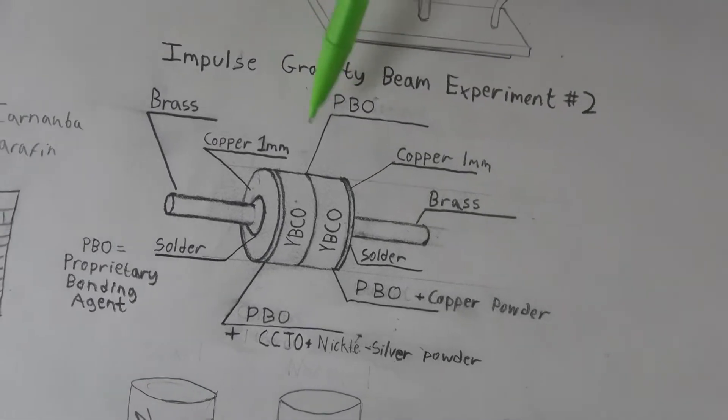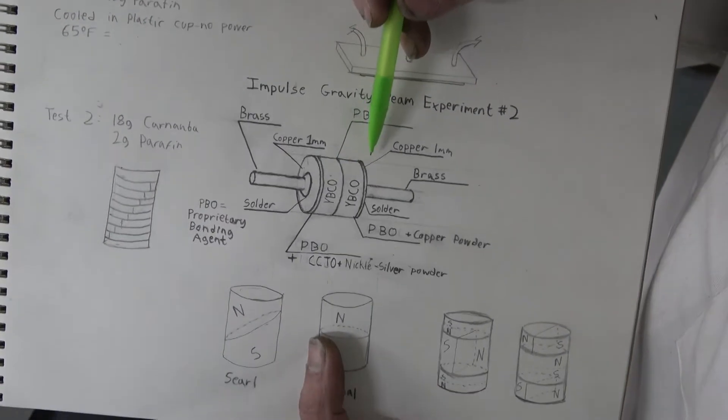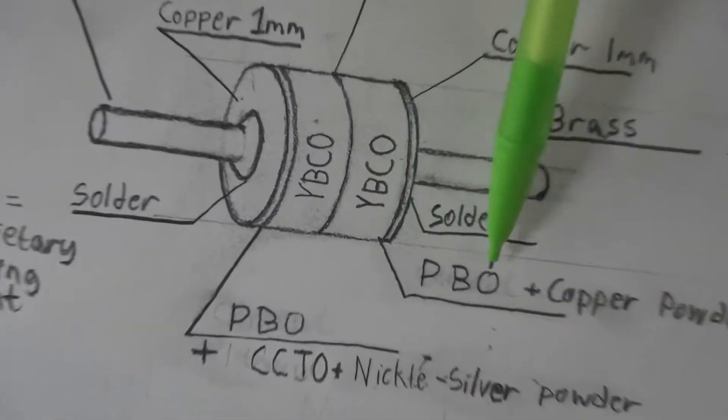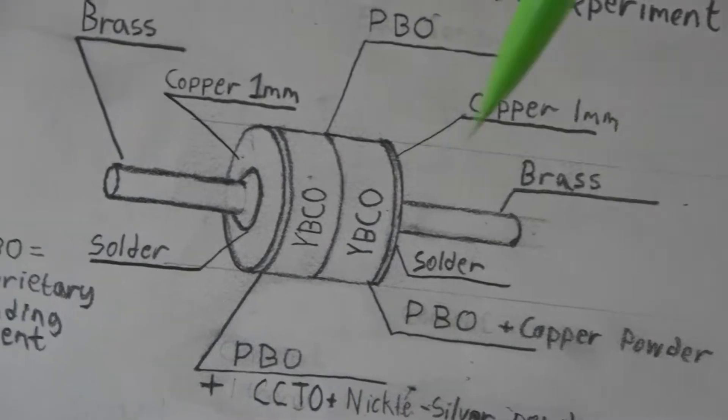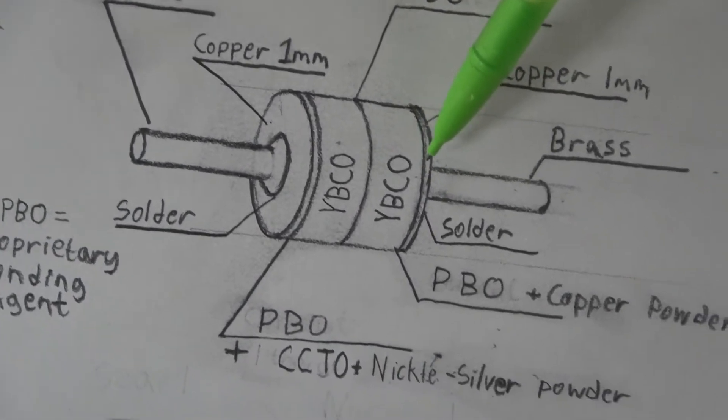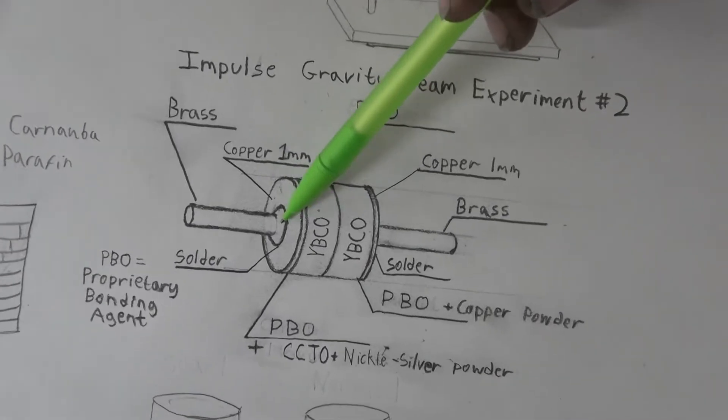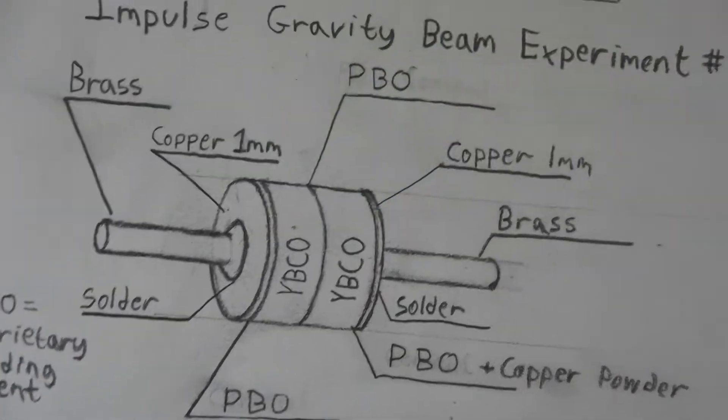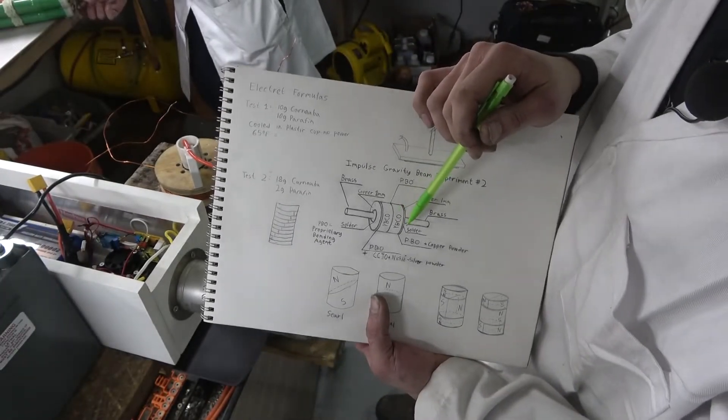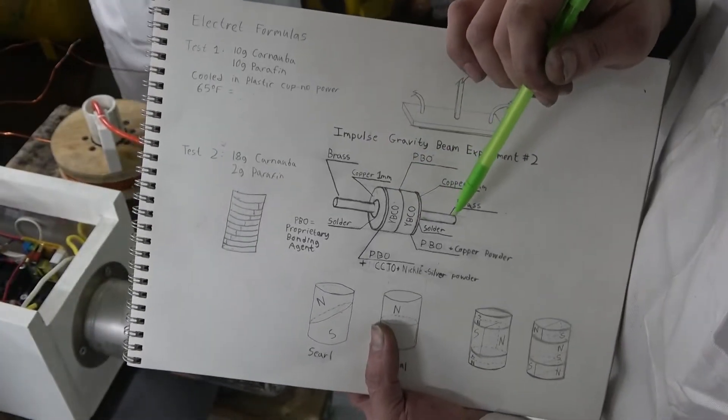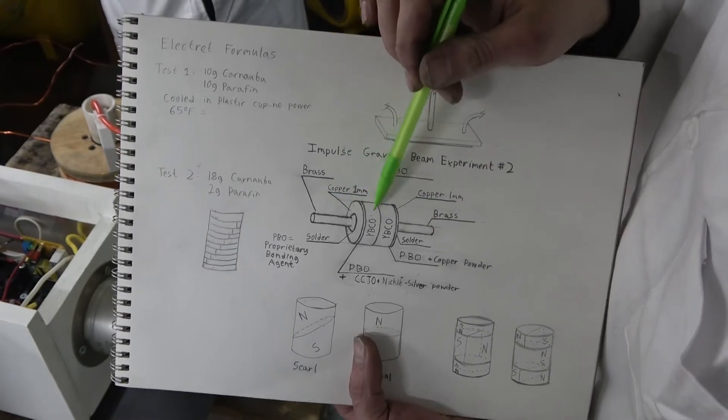And then we have just a plain PBO in the middle, and on the other side we have a mixture of the PBO and a copper powder. And the reason why we're putting the metal powders in this material is the PBO is actually not very conductive. So by cramming them full of these metal powders and sandwiching these plates on the ends of the YBCO, we're able to get some connection to the surfaces of the YBCO, which are ceramic and very, very hard to bond to.